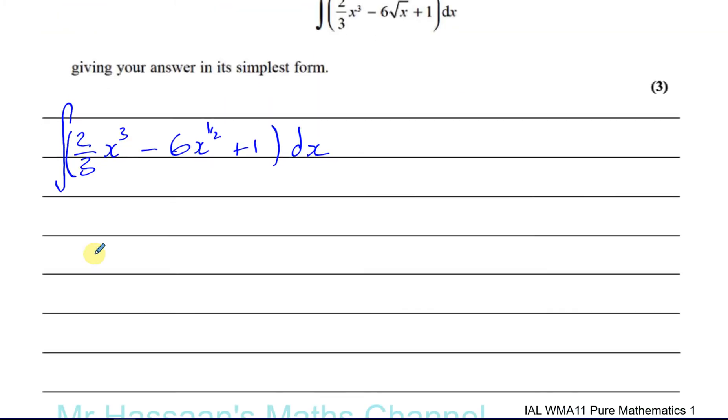Now the next step, we're going to actually integrate it. So you're going to basically add 1 to the power and divide by the new power. Now once you've integrated it, once you've started integrating it, you don't write the integral sign anymore and you don't write the dx anymore. So now you're going to have to add 1 to the power, so that's going to be 2 thirds, x to the power of 4, divided by 4. So you divide by the new power.